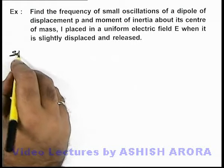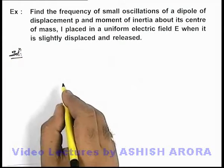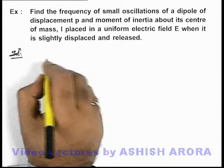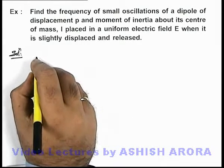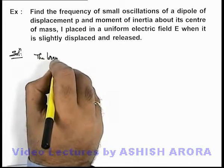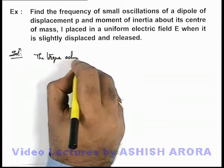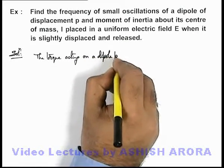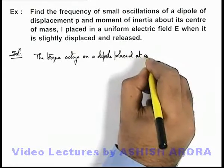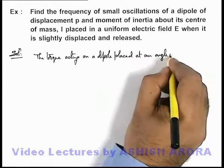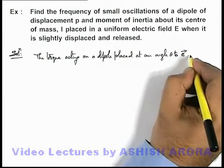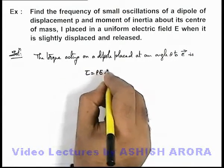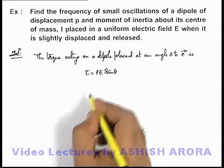We know well that when a dipole is placed in an electric field in equilibrium position and is slightly displaced, it experiences a torque. The torque acting on a dipole placed at an angle theta to electric field vector E is τ = PE sin θ, which we already discussed in the previous sections.